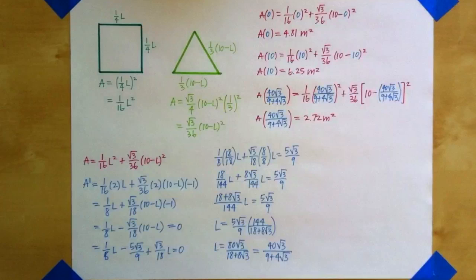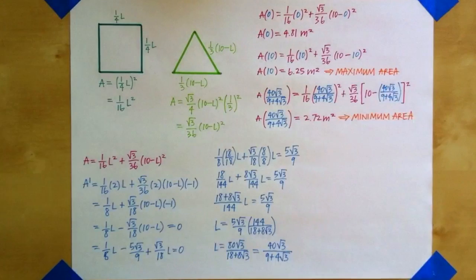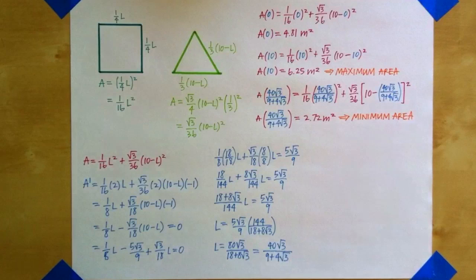So all I have to do is plug in my endpoints and my critical point, and see what value I get back for the area. We can see here that we get the largest area when L is equal to 10, and the smallest area when L is equal to our critical point value.